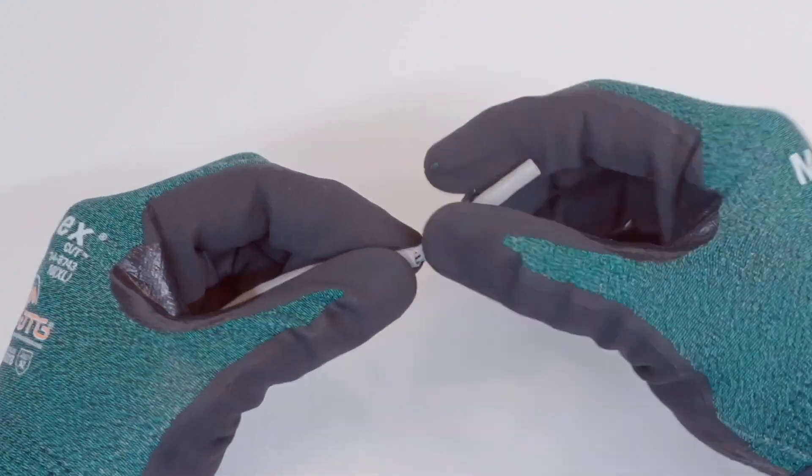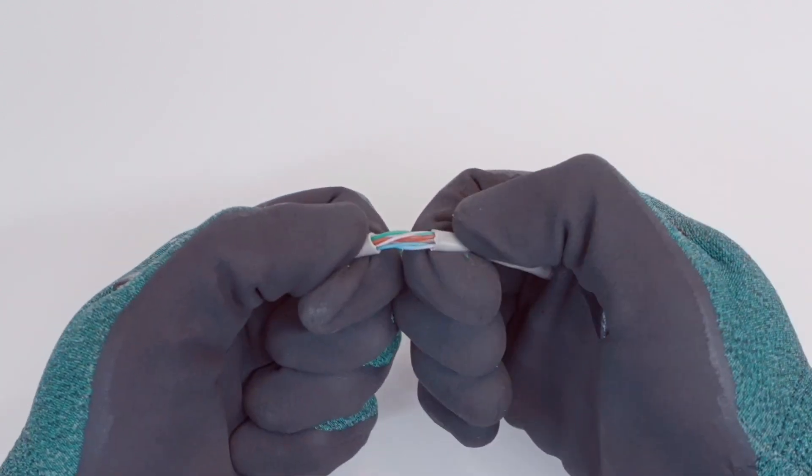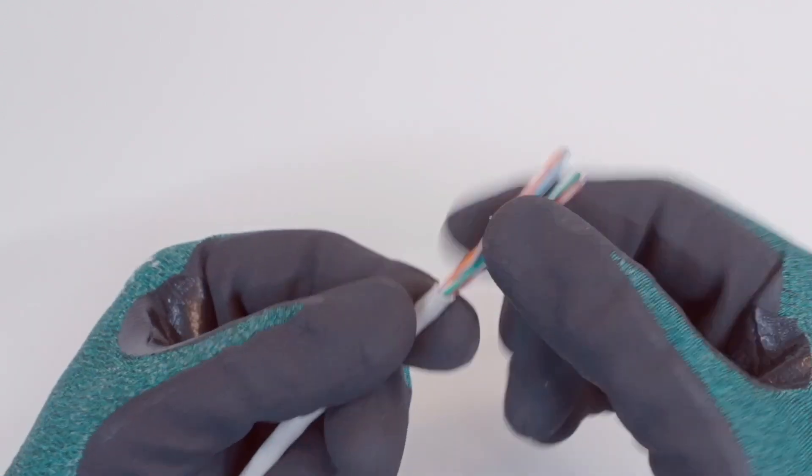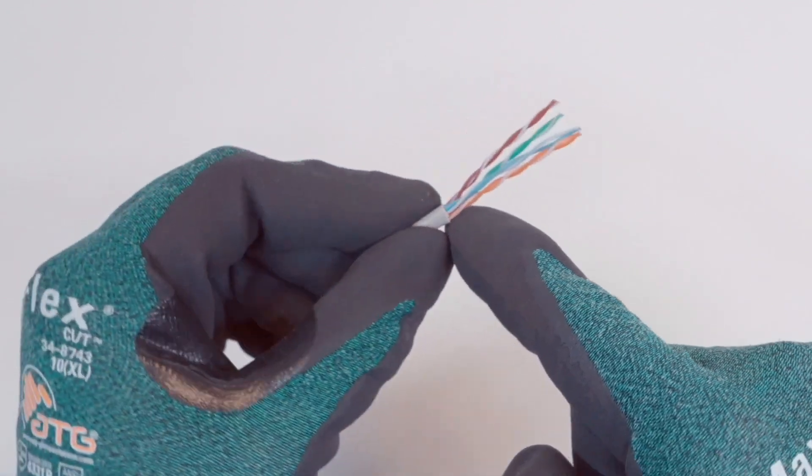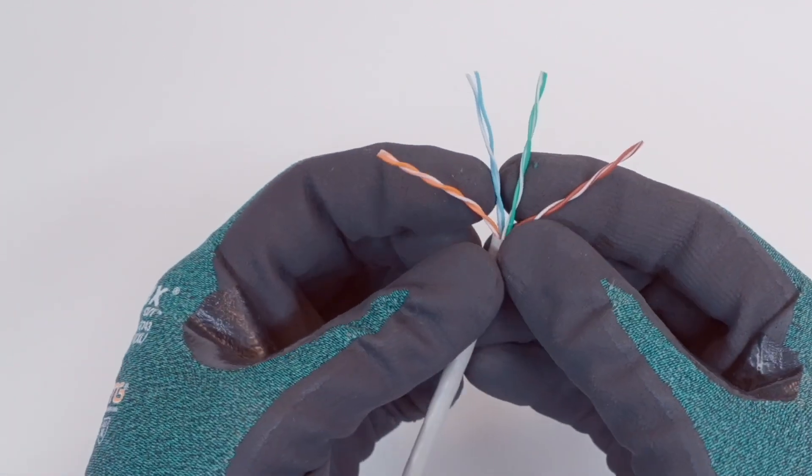Ethernet cable consists of four twisted pairs of wires, surrounded by an outer jacket. Each twisted pair is braided in a specific pattern to optimize the overall performance of the cable.